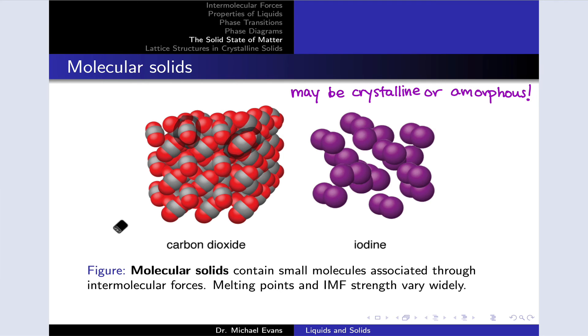And we can find CO2 molecules where you see the black circles here. So carbon dioxide, as it's drawn here, is a crystalline molecular solid. The solid iodine drawn here is an amorphous molecular solid, with the molecules arranged in relatively random orientations. So molecular solids may be crystalline or amorphous.